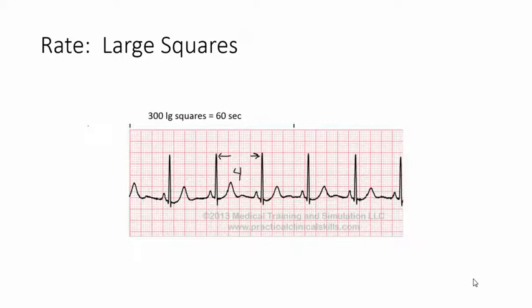Okay, now to get the heart rate using this method you take 300 and divide it by the number of large squares between each R wave. Okay, and that'll give you the heart rate. So ours, we take 300 divided by 4. The heart rate here is 75 beats per minute.